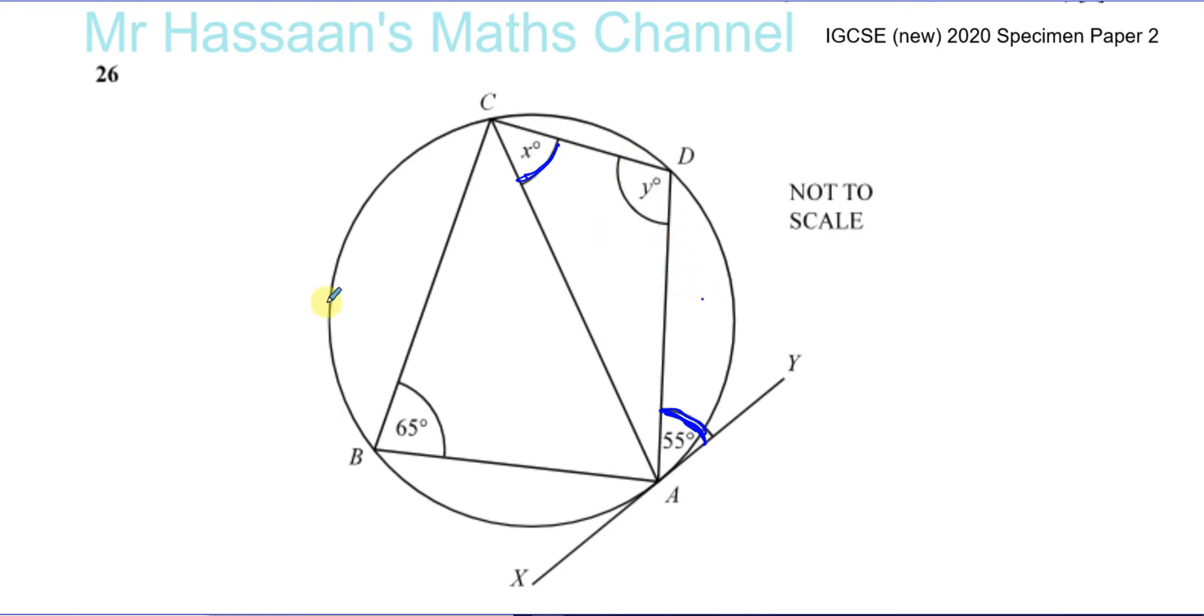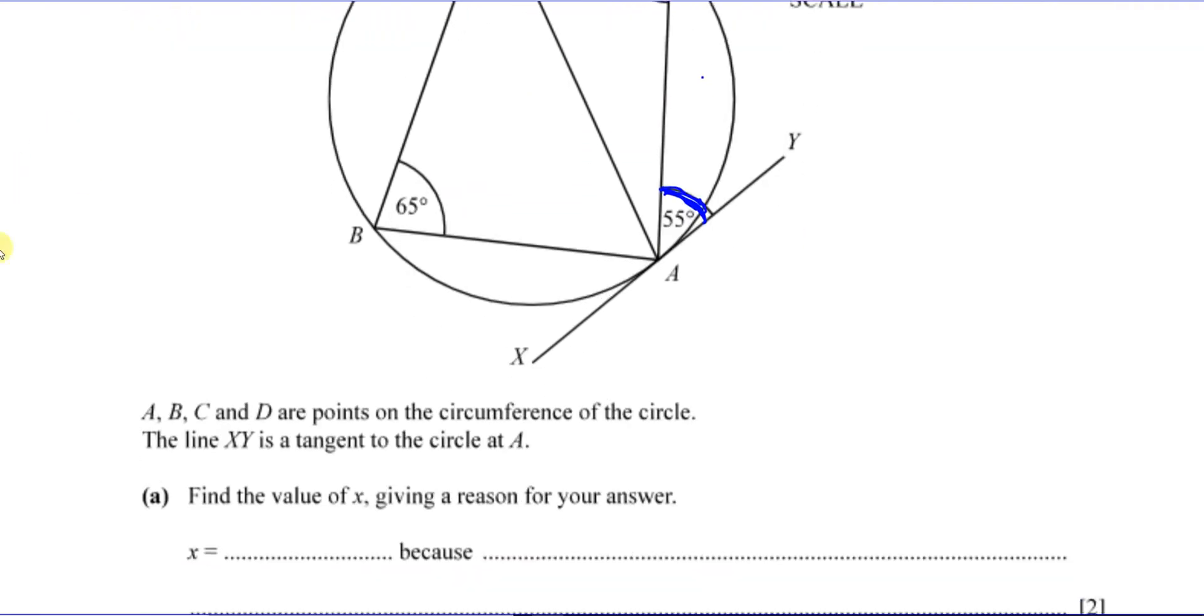This is one segment, this is another segment. So this is 55, and X will also equal 55. So you can say X equals 55, and all you can say is, if you put alternate segment, we can say it's in the alternate segment to, if you write something like that, it should be fine. Because it is in the alternate segment of AB, of the chord AB.